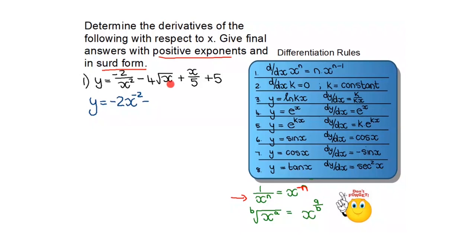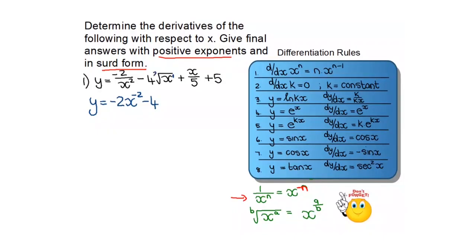I also have another exponent rule that will help me write the surd form into exponent form. This rule says if I have a surd form, I can write the base and then the inside exponent gets the top position of the fraction and the outside value gets the bottom position. There's actually an x to the power 1 inside and a little 2 outside, so I can write this as x to the power one half.